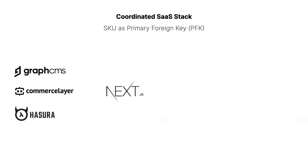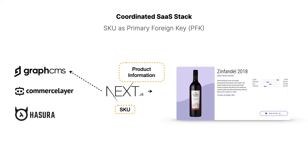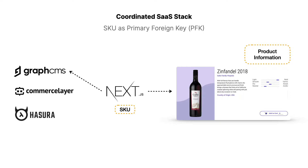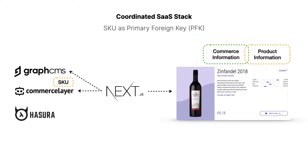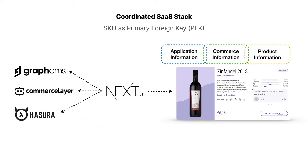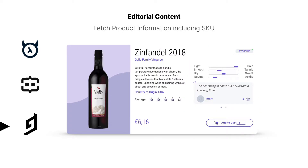The first step is we get the product information from GraphCMS and bring it into the application. We grab the product information, pull the SKU off for reference, and that populates the page. We follow that up with the actual commerce information, which adds in the availability and the pricing. And the last component — we utilize the SKU again to pull in the reviews. Technically we're firing off the application content, reviews, and pricing information simultaneously, but for the purposes of the animation we're showing it sequentially.